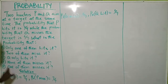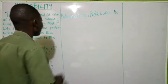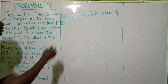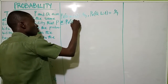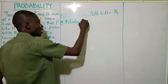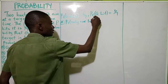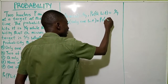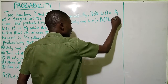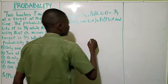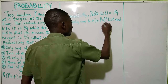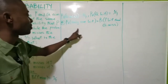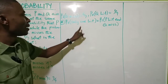Question A: probability that only one of them hits the target. If only one of them hits the target, that means it's either P hits it and Q misses, or P misses and Q hits. So probability that only one of them hits equals: probability that P hits and Q misses, or probability that P misses and Q hits.